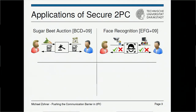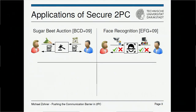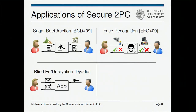As the next application, we have privacy-preserving face recognition, where a camera with a face sample and a database of faces on the other side determine whether a face sample is in a database of users — for instance, whether a specific face is in a terrorist database. Another example is privacy-preserving AES, where one party has a message, the other has a key, and the party with the message gets the encrypted message under the second party's key. A variant of this is actually sold as a hardware security module by Dyadic Security.